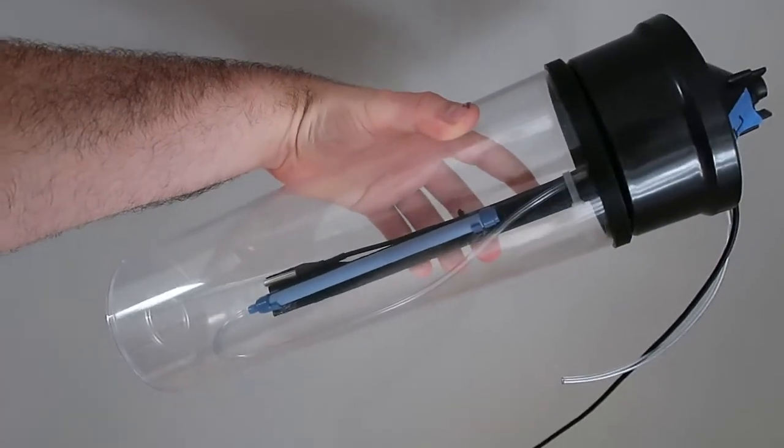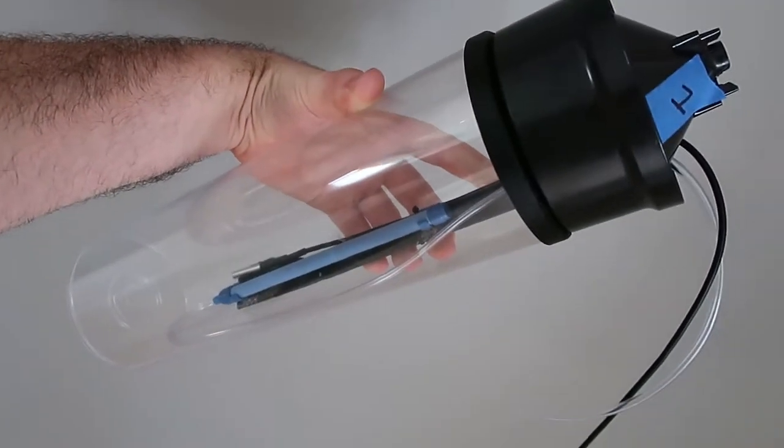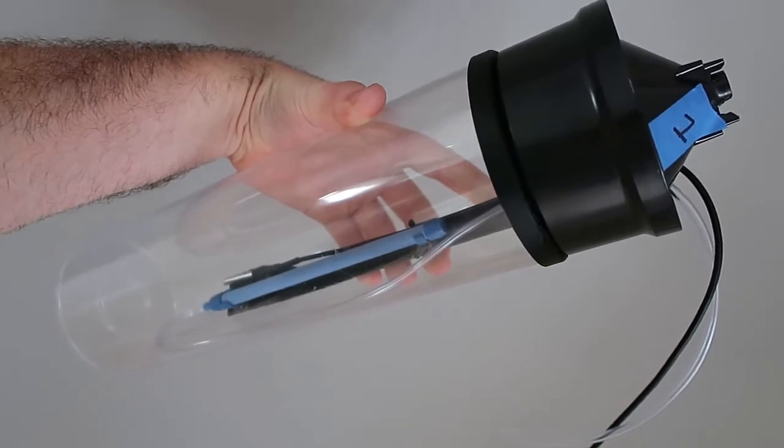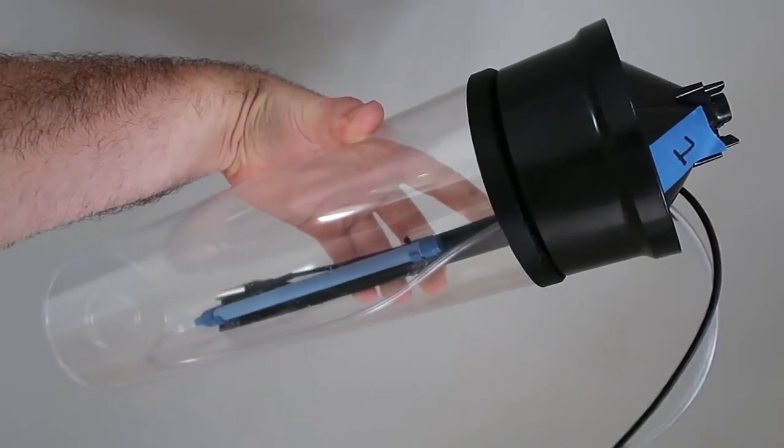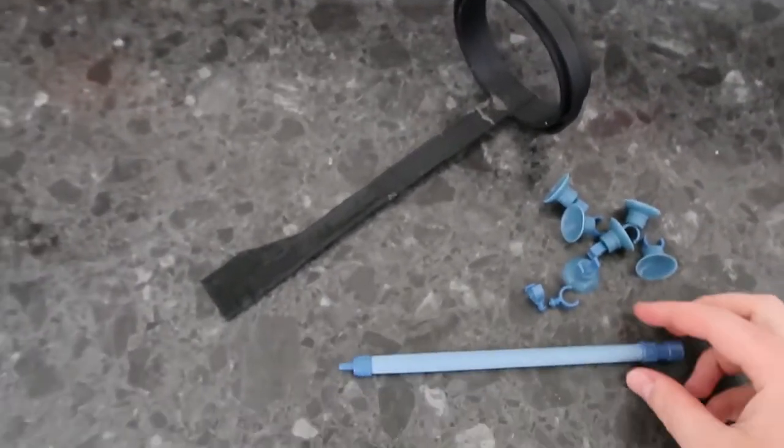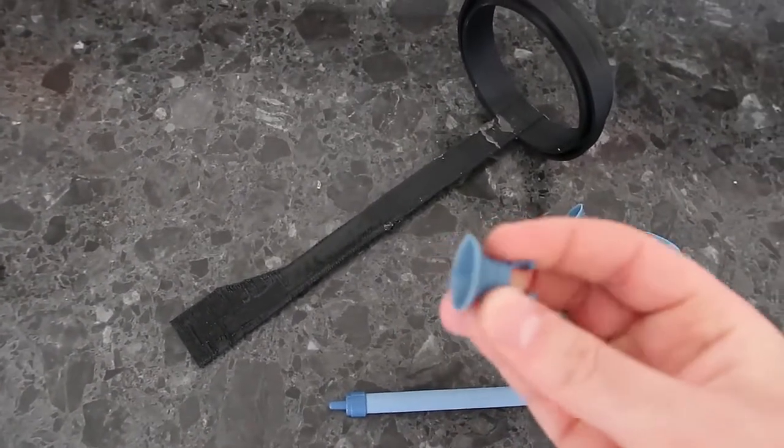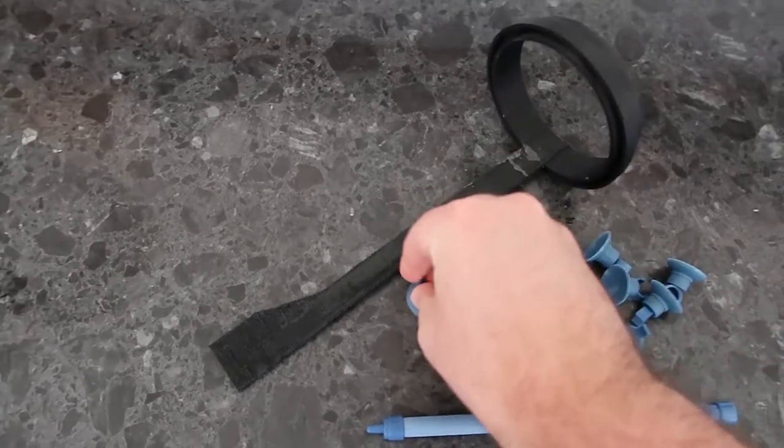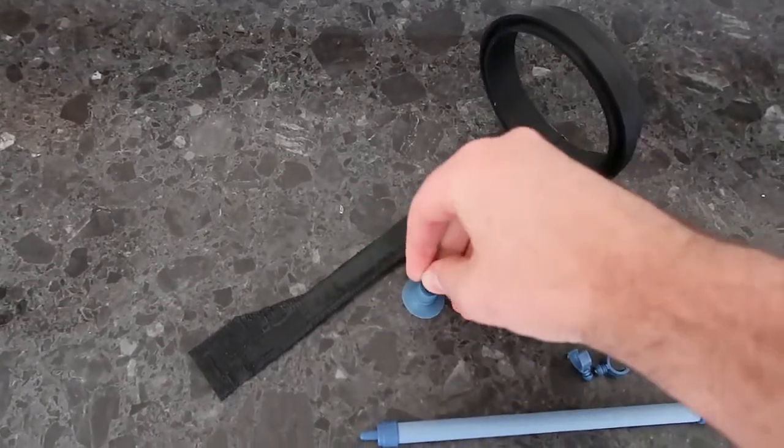Alright, so for those who are following along with the Algae CO2 scrubber, what we're doing today is putting together the tubes itself and assembling the majority of the components. So what we're going to do to start off with is looking at those air bubblers. We want to attach them to the adapters that are created.